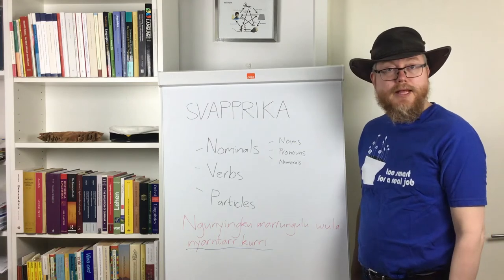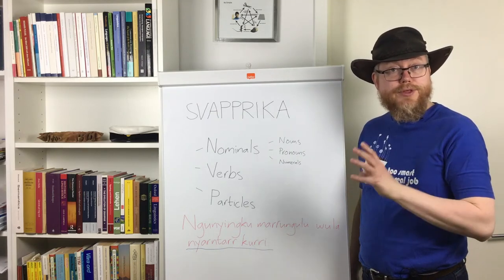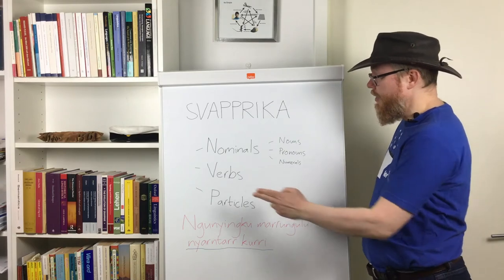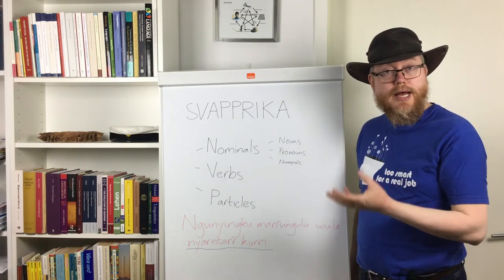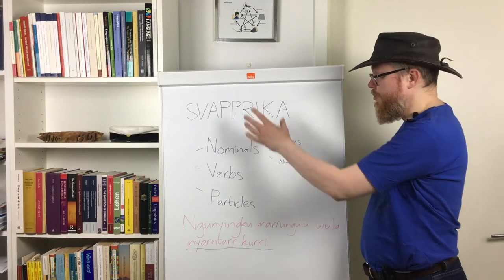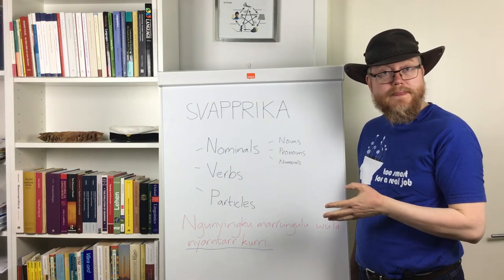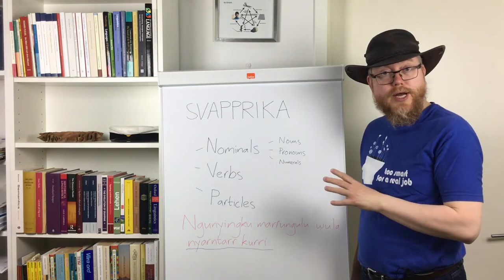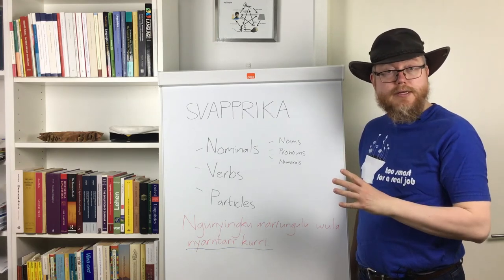Using SVAPRIKA to introduce the word classes: S stands for substantive — noun. Nouns are names for things, people, places, and so on. V stands for verbs, which describe what happens, what people do, etc. We have two A's — adjectives, which describe nouns. Then we have two P's: prepositions and pronouns. Pronouns are used instead of nouns — hence the name pronoun.